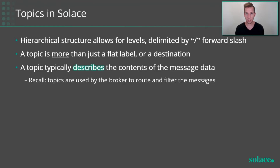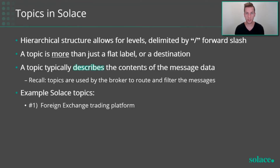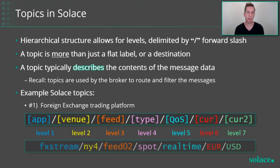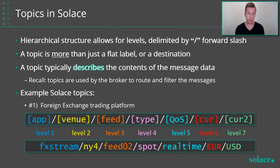Let's take a look at some real-world use cases. Consider a foreign exchange trading platform. You might want to include the location that the data is being published from as part of the topic string, the specific feed handler publishing that data, the type of quote it is, the quality of service — whether it's a real-time feed or a delayed feed — and even the currency pairs the quote is related to. These could all be part of your topic string description.